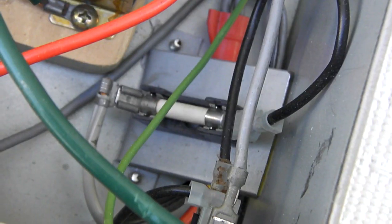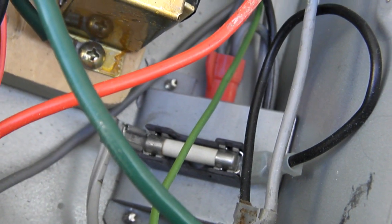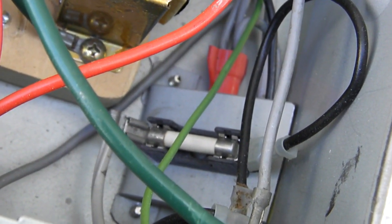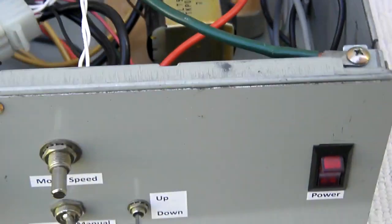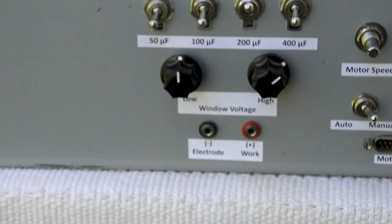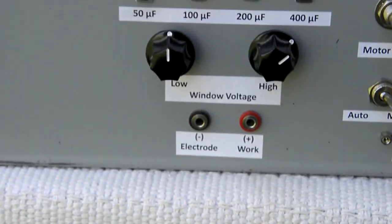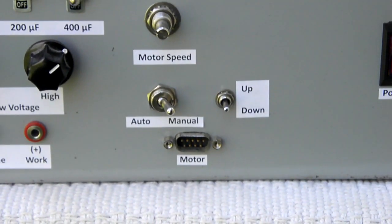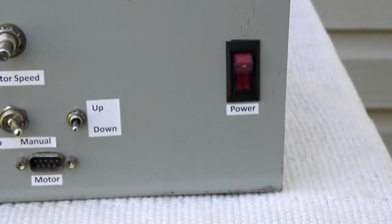One last scavenged item was a fuse holder, and the fuse is probably scavenged also. That's actually a slow blow fuse from a microwave oven. Coming around to the front, I actually went out and bought all these switches and knobs. We have all the controls for the EDM here, and a place for the motor where a stepper motor hooks up.